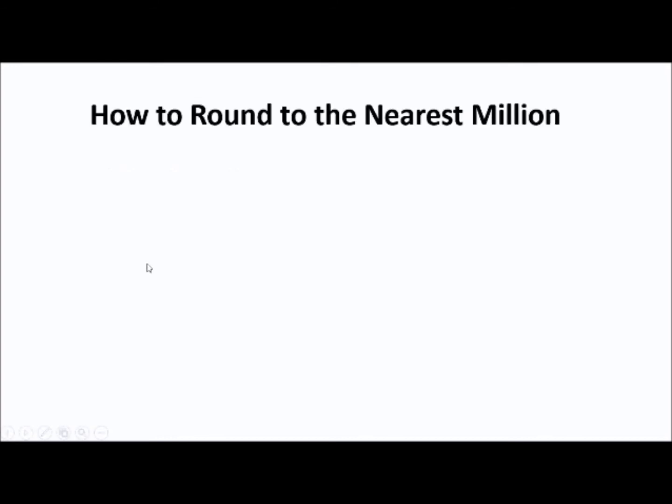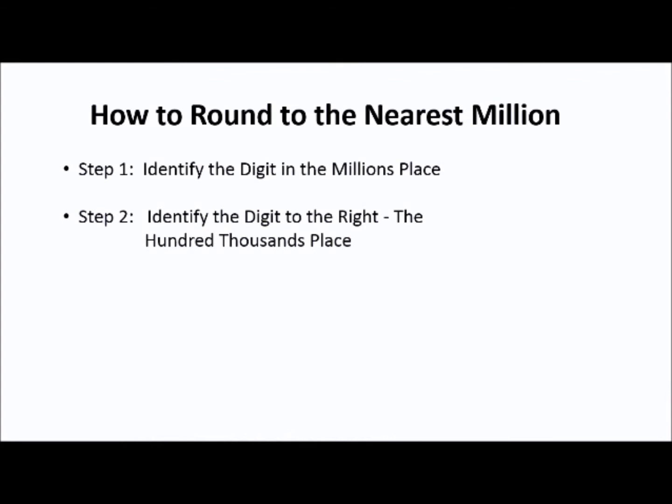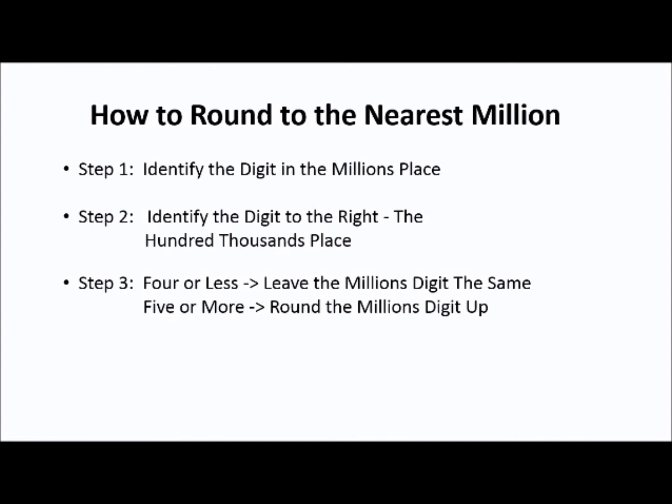Now, I will show you how to round to the nearest million. First, you identify the digit in the millions place. Next, you identify the digit to the right, the hundred thousands place. Then, if it's four or less, leave the millions digit the same. If it's five or more, round the millions digit up. Finally, change each digit to the right of the millions place to a zero.